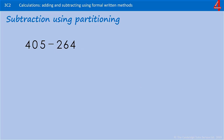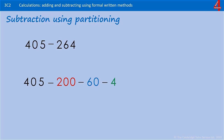This time we have two three-digit numbers. If you want to pause the video and try this, go ahead. We're partitioning 264 and taking it away from 405, starting by taking away the 4.